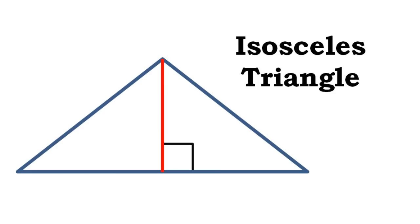In the case of an Isosceles Triangle, we see the special case where the Altitude, the Angular Bisector, and the Median all coincide to the same line.